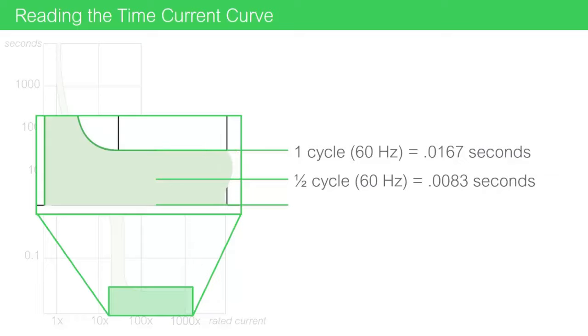Now, why do some time-current curves show a line at one cycle and at a half cycle? Circuit breakers that share a frame and the same amperage rating can have differing short circuit protection levels. This will be discussed more in the later course, Selecting Circuit Breakers. But for now, we wanted to point out that some circuit breakers may share the same time-current curve, with notes on it to point out differing trip values.